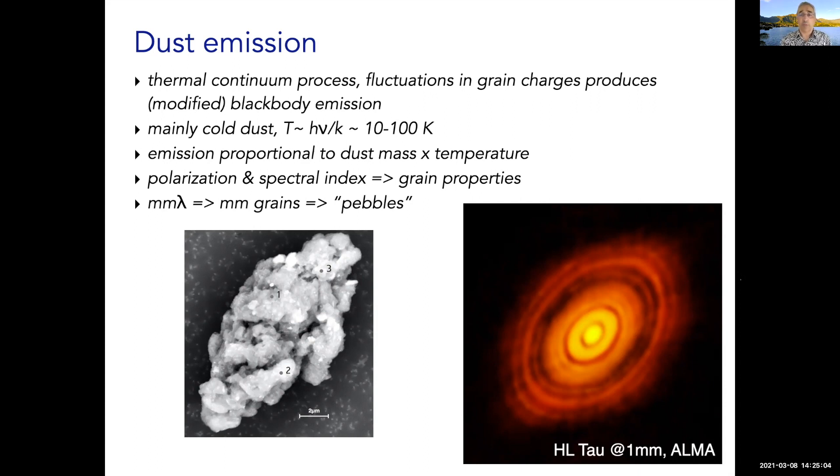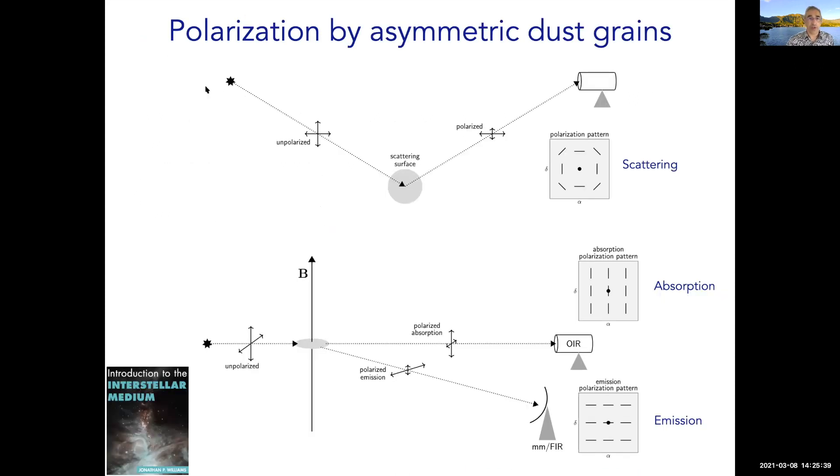This changes the spectral index or the efficiency with which the object emits. By measuring the spectral index, we can infer something about the grain properties. The amount of emission depends on the amount of dust you have, but because we're talking about thermal emission, it also depends on the temperature. Finally, it can be polarized because the dust grains are not necessarily spherical, and if they are preferentially aligned, you can get a preferential direction of emission. If you scatter off them, you can get a preferential geometry which will lead to polarization.